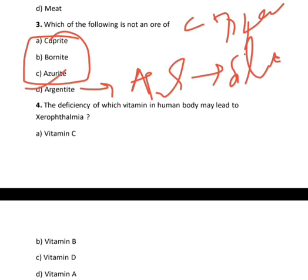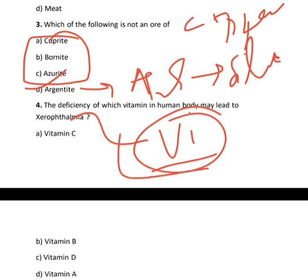The deficiency of which vitamin in human body may lead to xerophthalmia? This disease is due to a decrease of vitamin A and causes problems in the eyes leading to blindness. The correct option is vitamin A.